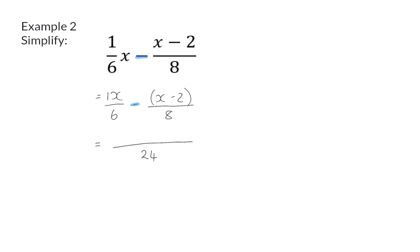So, my first fraction has to be multiplied by 4 to form 4x over 24, and the second fraction has to be multiplied by 3. Here, it is very important to realize that you also have to multiply the minus in, so you will be multiplying with minus 3 in the numerator.